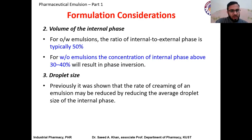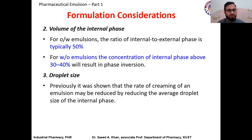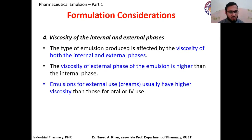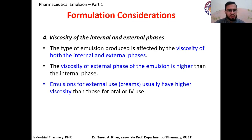Droplet size is also important — if we increase the droplet size, the surface area increases, and as mentioned previously, this increases the Gibbs free energy and leads to instability of the emulsion. Viscosity of the internal and external phases is also important. If viscosity is too high, administration becomes difficult. For oral and intravenous applications the viscosity needs to be at the lower end, while for creams and topical formulations a slightly higher viscosity is acceptable.